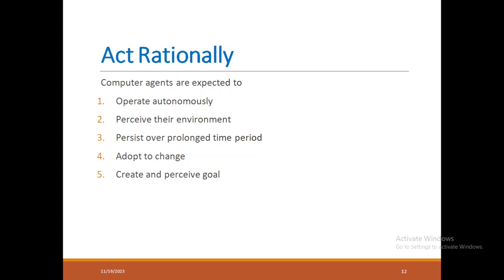How do you make your system act rationally? The first requirement is to operate autonomously — build an AI system that operates on its own. Second, it should perceive the environment: it should see using vision, and it should hear. Third, it should persist over a prolonged time period — working 24 by 7 throughout its life with consistency, stability, and sustainability. Fourth, it should adapt to change and be proactive in nature. Fifth, it should create and perceive a goal — you have built the AI model to achieve a goal, and it should be able to create and pursue that goal. All together, these five concepts must be incorporated so that your AI model acts rationally.